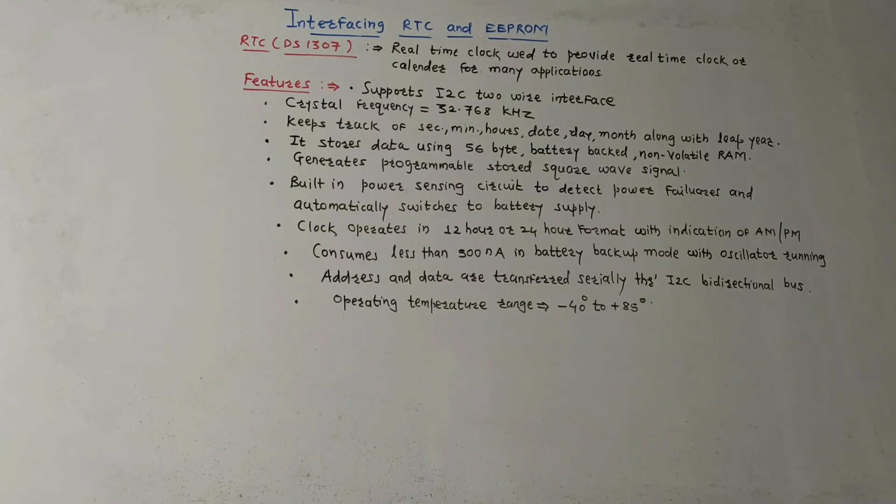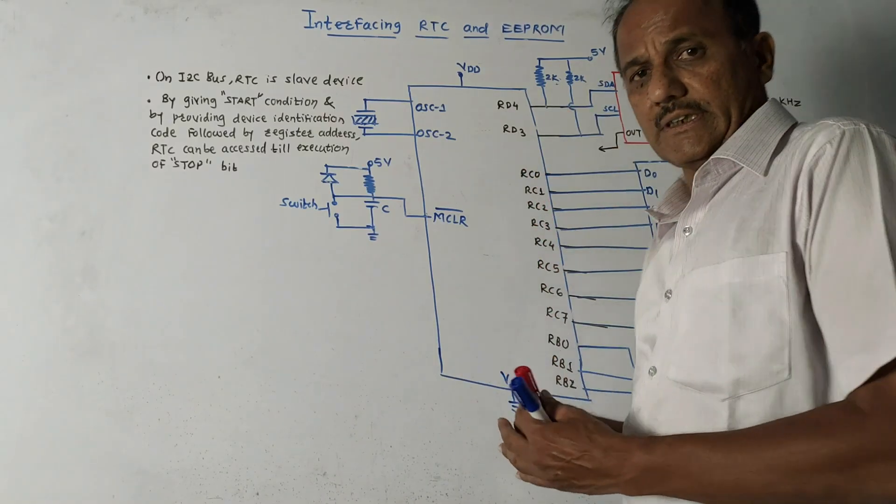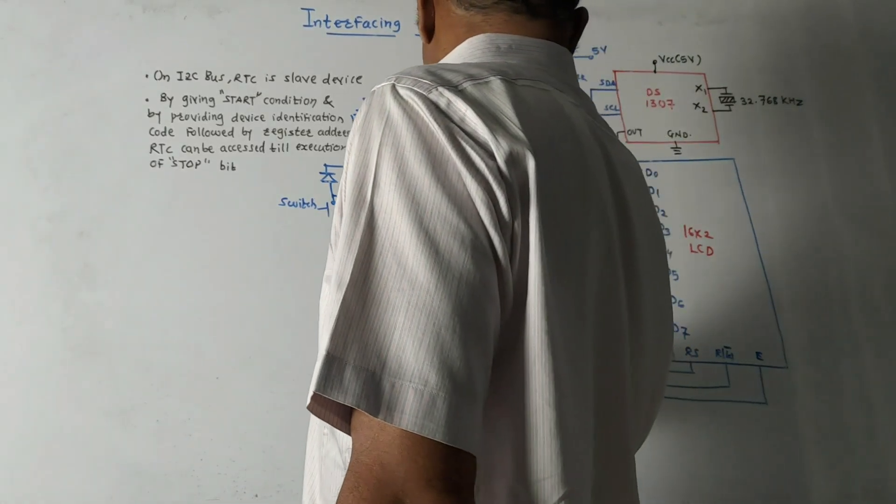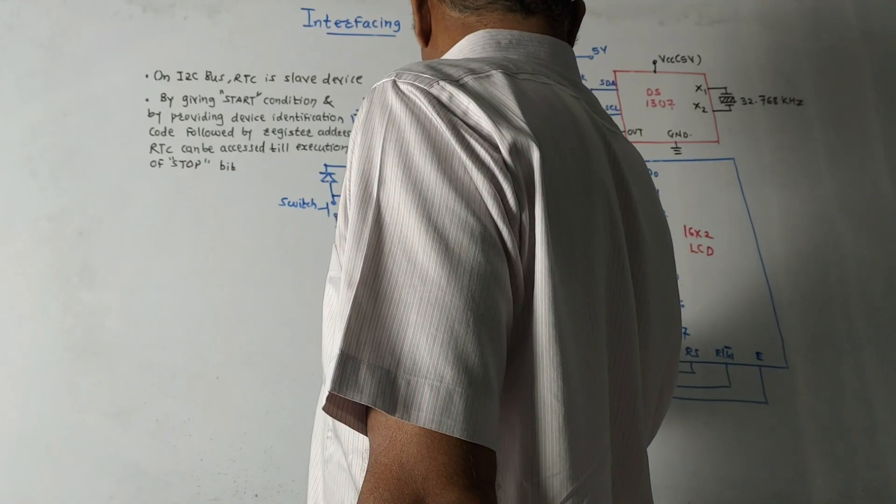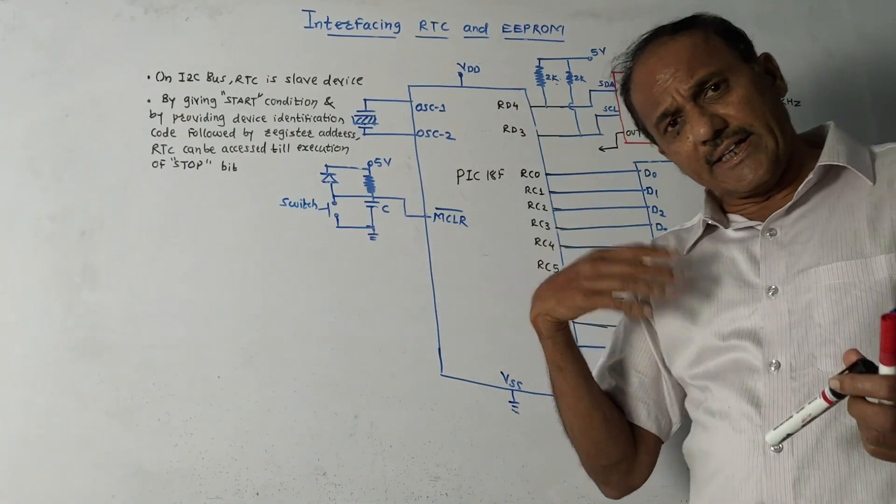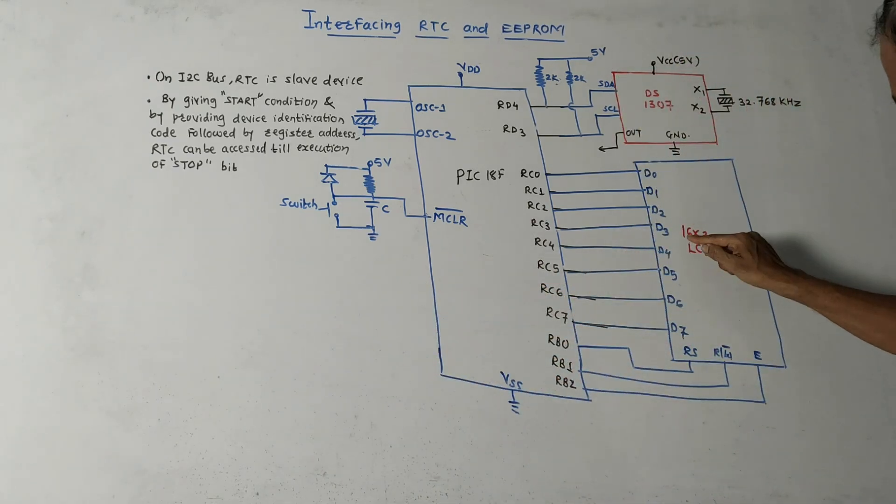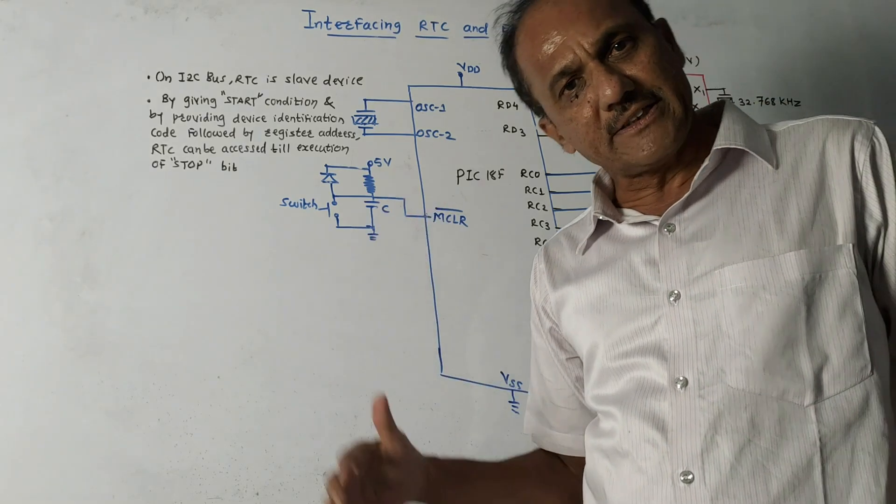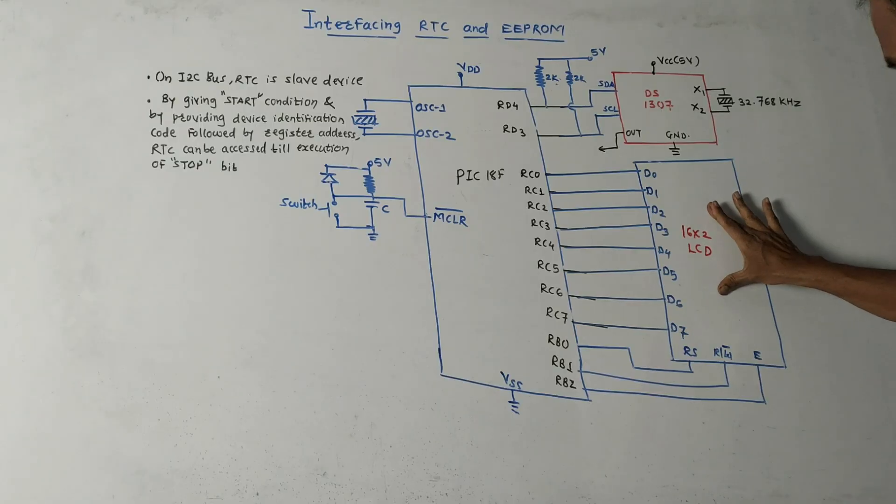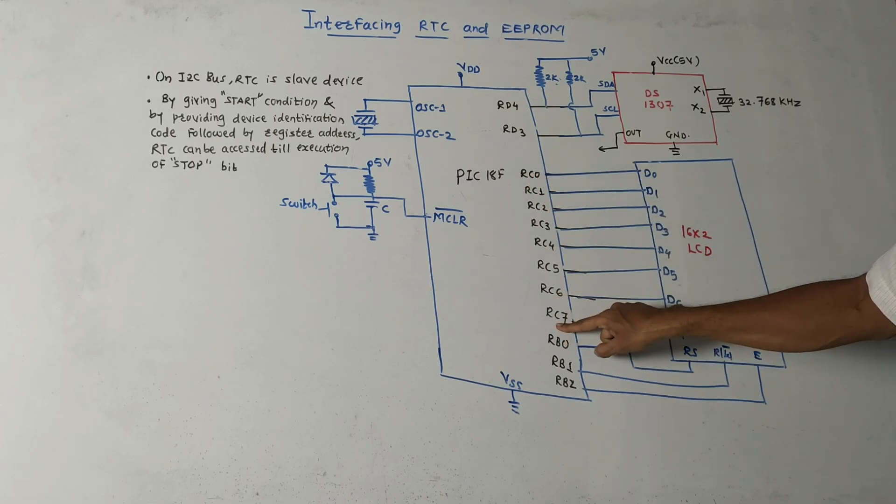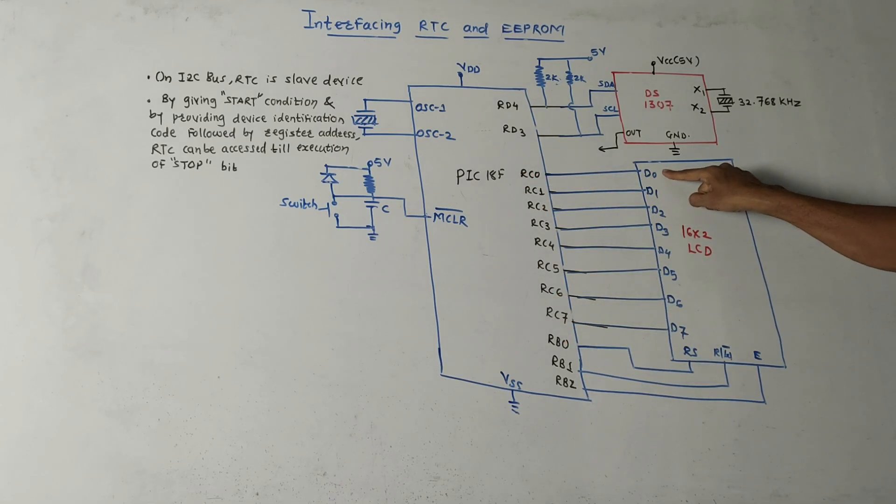This diagram shows interfacing of RTC with PIC 18F microcontroller. To get information related to date and time, we are using 16 by 2 LCD. We already learned interfacing of LCD with PIC 18F. This LCD is connected to port C of PIC 18F, with pins RC0 to RC7 connected to LCD pins D0 to D7.